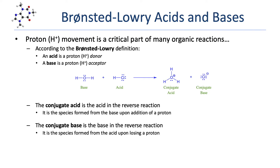Here is an example of a simple Bronsted-Lowry acid-base reaction. On the left, we have water, which will act as a base, and HCl, which will act as an acid. The products here are just hydronium and chloride. Water, which acted as the base, accepted a proton to become hydronium, and HCl, which acted as the acid, lost a proton and became chloride.